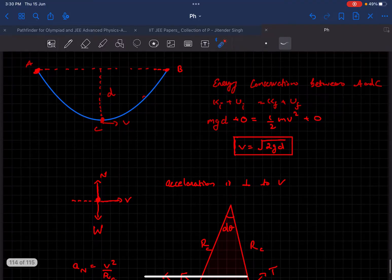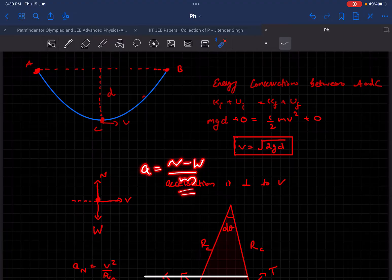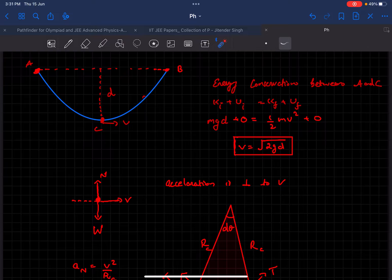Now there is no way we can find the acceleration in the normal direction by using the FBD, because the mass of the bead is not given in this case and we won't be able to determine the reaction force either.